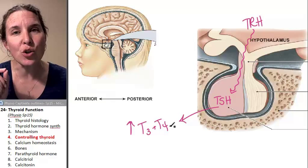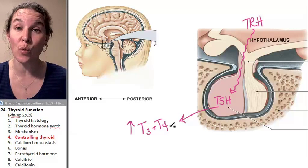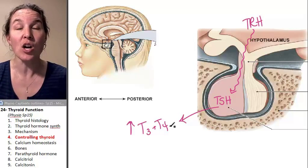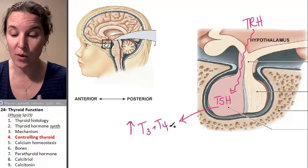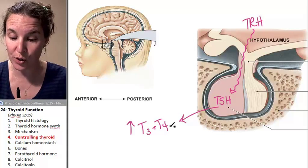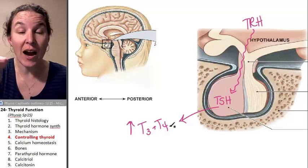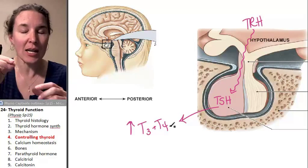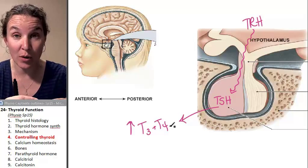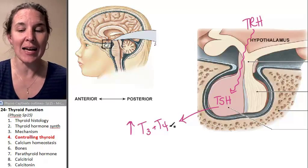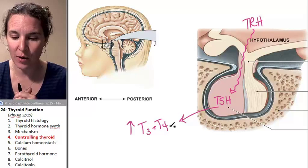You can increase the rate at which iodine is absorbed into the colloid. The more iodine you get, the more thyroid hormone you can produce. You can also increase the rate at which iodine is added to the thyroglobulin — if you add the iodine faster, you can make more thyroid hormone.